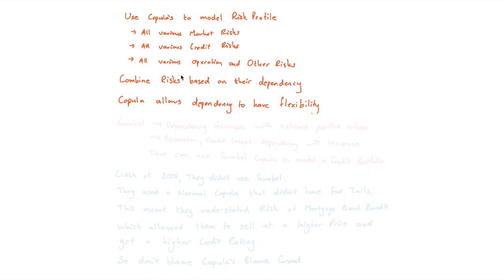But you can also use the copula to combine all of these different risks together based on their dependency. And you might be saying, well, why don't I just use a multivariate distribution? Well, the whole idea with the copula or why it's better is it allows this dependency between the risks to have flexibility. Specifically, let's look quickly at the Gumbel copula. We will see that it is designed in such a way that its dependency increases with extreme positive values. That means that when we enter into a recession, we can expect a whole bunch of our credit losses. They're all going to start defaulting at the same time or their dependency is going to increase. And the Gumbel copula will be able to capture this change in dependency way better than any multivariate distribution possibly could.